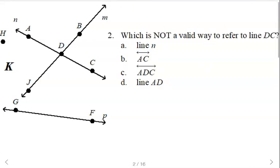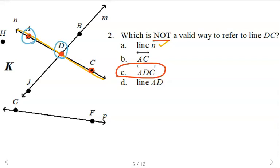Which is not a valid way to refer to line DC? Line DC — that's right here. Line M — that's a valid way. Line AC — that's two points on that line, so that's a valid way. Line ADC — you never use three points to refer to a line, so that is not a valid way. Line AD — those two points are on that line, using two points. So choice C is the only one that does not refer to line DC in a valid way. You cannot use three points to name a line.